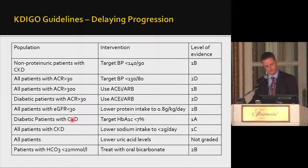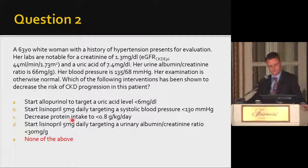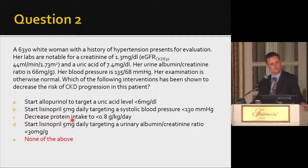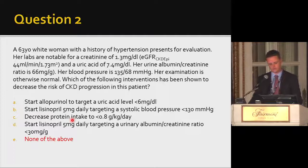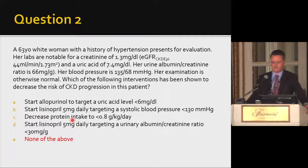There is also relatively good evidence to reduce blood pressure below 140/90 and to use an ACE inhibitor or ARB in patients with macroalbuminuria. The rest are essentially suggestions based on limited, mostly observational data. Allopurinol has not been shown in RCTs to be beneficial. A target BP below 130 has been recommended but not shown to decrease progression; in fact, the SPRINT trial showed intensive blood pressure reduction was associated with increased incident CKD in patients without CKD at baseline. Protein restriction is not recommended for stage 3. In non-diabetic patients, there is no study showing ACE inhibition specifically benefits those with microalbuminuria, and there is no role for targeting a specific urinary albumin-to-creatinine ratio.